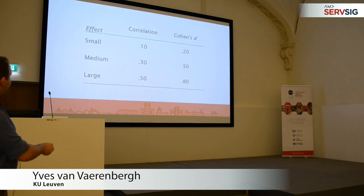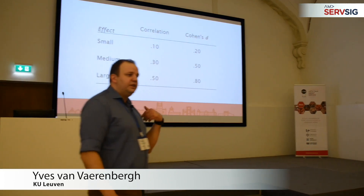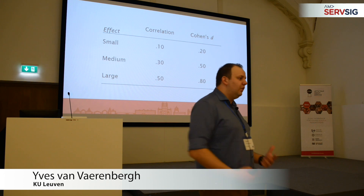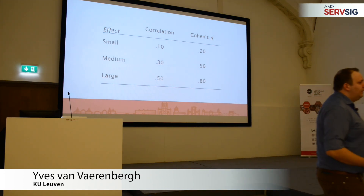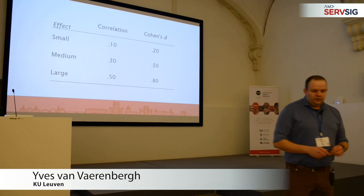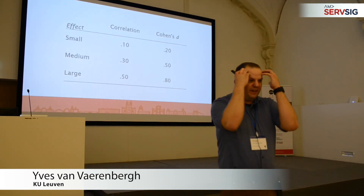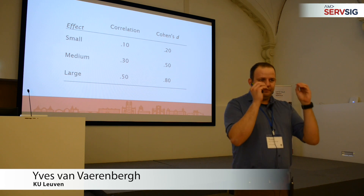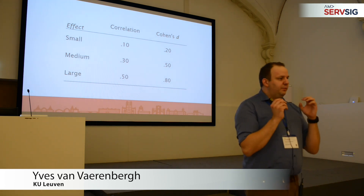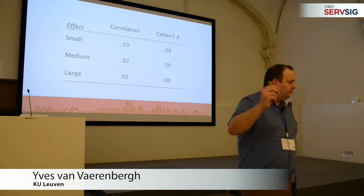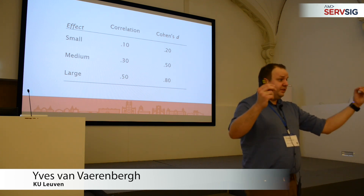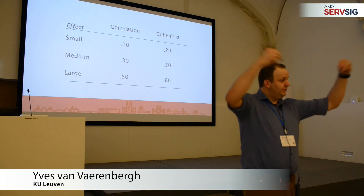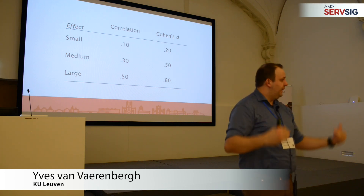Everybody probably knows these cutoffs as well. If you have a correlation of 0.10, it's a small or weak relationship. 0.30 is medium. 0.50 is a large or strong relationship. 0.70 is a very strong relationship. Just to give you an idea about thinking in terms of effect sizes — we're not talking about whether this is significant or not. We're just looking at the effect size: how strong is the effect we are observing, how strong is variable A related to variable B?